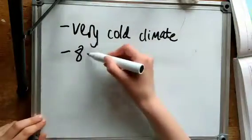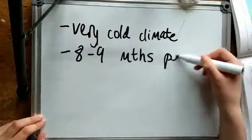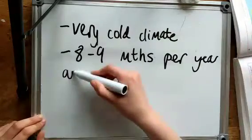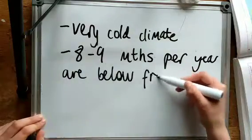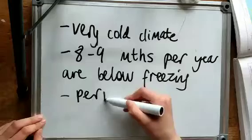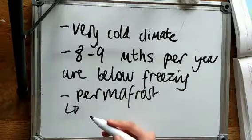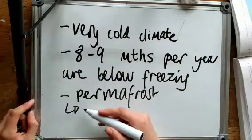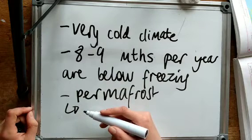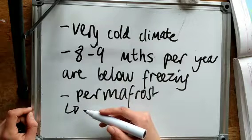So there is a very cold climate here. 8-9 months of the year, the temperature is below freezing, average temperatures are below freezing. This means that the ground is permanently frozen, permafrost, and this thaws in the summer months, which are several months in the year.